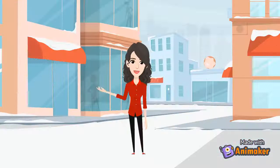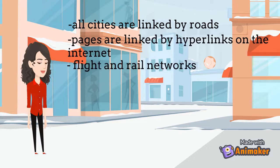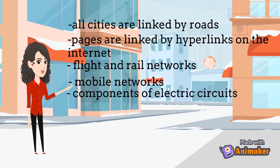Do you know? Everything in this world is possibly linked on graph theory. For example, all cities are linked by roads. Pages are linked by hyperlinks on the internet. Flight and rail networks, mobile networks, components of electric circuits, components of computer chips, etc.